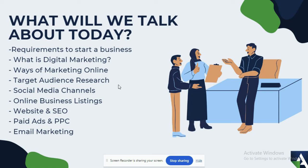The next thing is website and SEO — how you can use a website to attract more traffic to your business. SEO means search engine optimization, which is optimizing your website for keywords to get more traffic. For example, if you're a lawyer, you would optimize your website so that when people search 'lawyer near me,' they find your website.